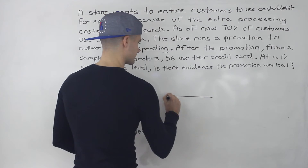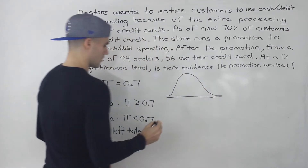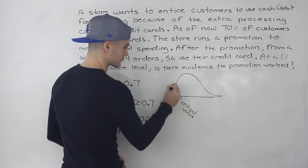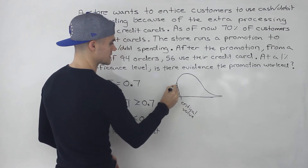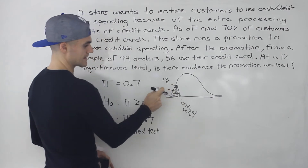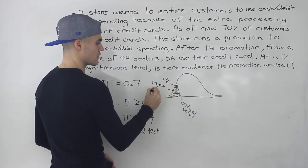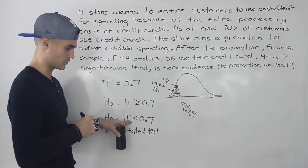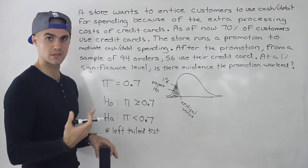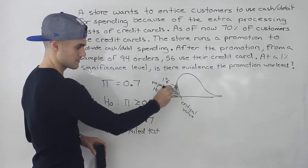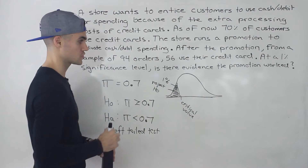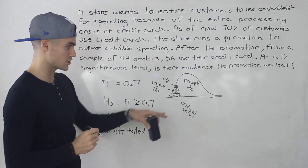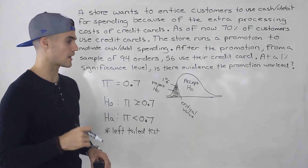So if we draw this left-tailed test, there's one critical value over to the left. The area in that rejection region is going to be 1%. We're going to reject the null hypothesis, and if we're rejecting it, then there's evidence pointing towards the alternative hypothesis — meaning the proportion is less than 0.7, which would mean the promotion worked. If our test statistic falls in the acceptance region, the non-rejection region of the null, then there's not enough evidence showing that the promotion worked.